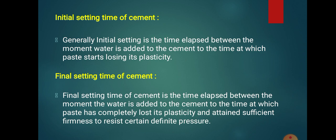Final setting time of cement is the time elapsed between the moment water is added to the cement, to the time at which the paste has completely lost its plasticity. That is known as the final setting time of cement. The final setting time is the time when cement paste has hardened sufficiently such that a 1 mm needle makes an impression on the paste, but a 5 mm needle does not make any impression.